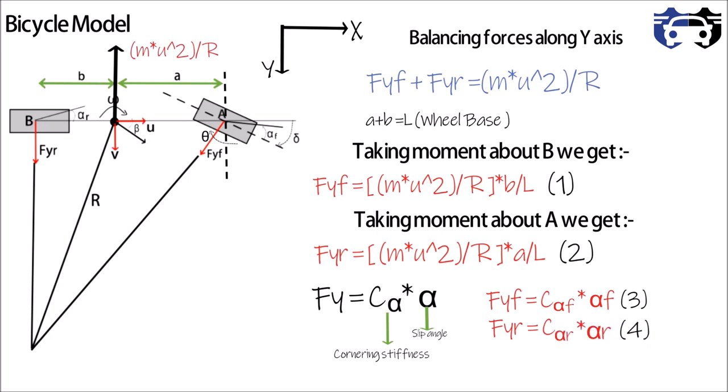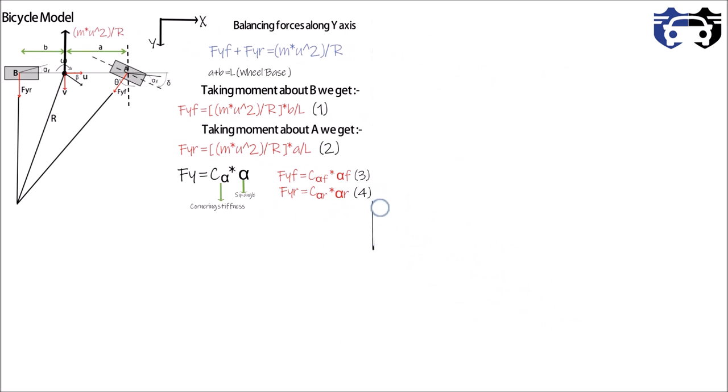And Fyr = C_alpha_r * alpha_r. This is our equation 4, where C_alpha_f and C_alpha_r are the cornering stiffness for front and rear tire respectively. Now from equations 3 and 4 we get the following values of alpha_f and alpha_r.